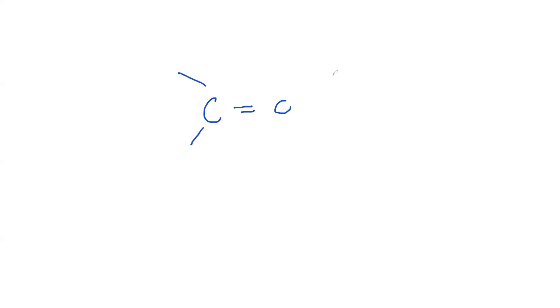You can also think in terms of electron-rich and electron-deficient, but the simple rule is: where the electrons start and where they end — that is how we represent an arrow. For example, if we have a carbon–carbon double bond and a hydrogen that is partial positive, and I draw an arrow from H toward the double bond, is that correct?